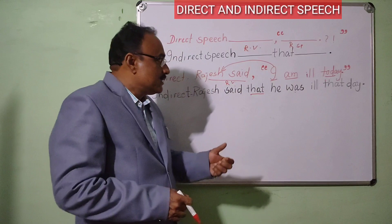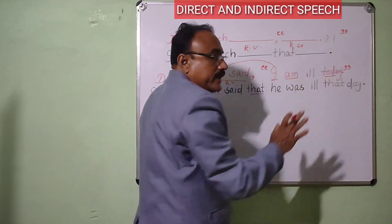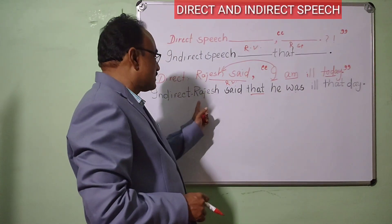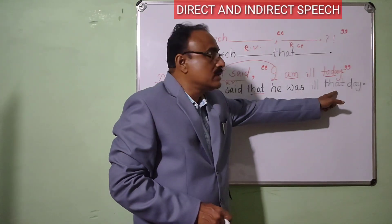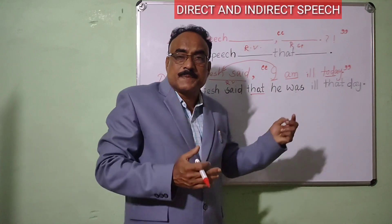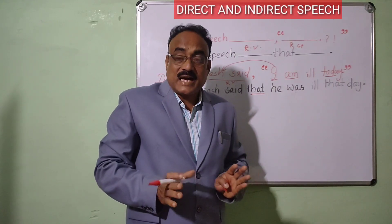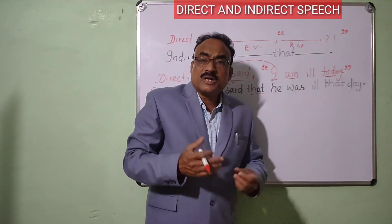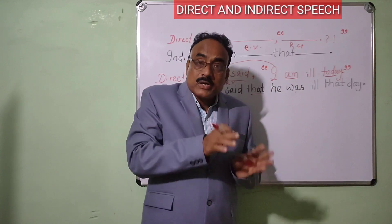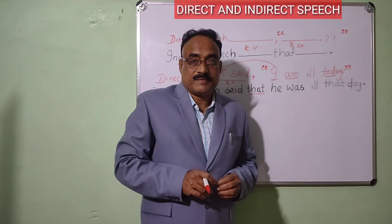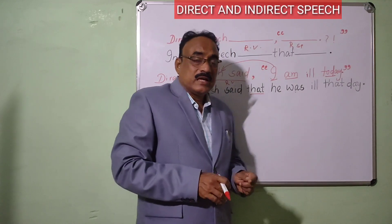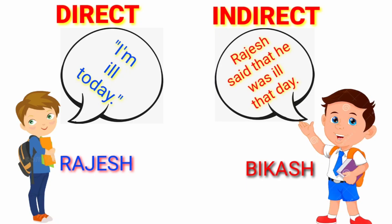I would like to say here: the actual words of Rajas are 'I am ill today.' But in indirect speech, 'Rajas said that he was ill that day.' That means Rajas does not speak it, but this indirect speech is reported by Vikas — by another person. You know that politicians speak dialogues, reported by the reporter to the newspaper. That means Rajas's actual words are reported by Vikas. What did Rajas say? 'I am ill today.' But what did Vikas say? 'Rajas said that he was ill that day.' This is the indirect speech.